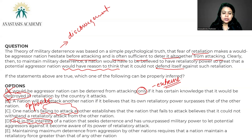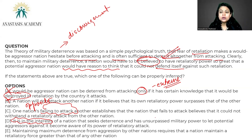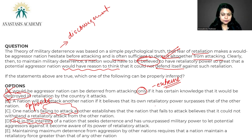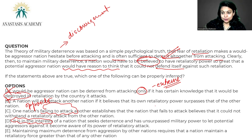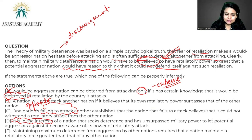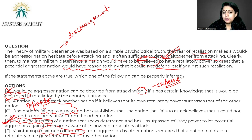Option D: it is in the interest of a nation that seeks deterrence and has unsurpassed military power to let the potential aggressor become aware of its power in retaliatory attack — because it's about the power of belief. A nation would have to be believed to have retaliatory power; only then would they be deterred from attacking. This is why on 15th August and 26th January we see a lot of flexing in terms of defense ammunition and force. D is the correct answer. Option E: maintaining maximum deterrence is extremely extreme. D — show the people what you have so that they are deterred.